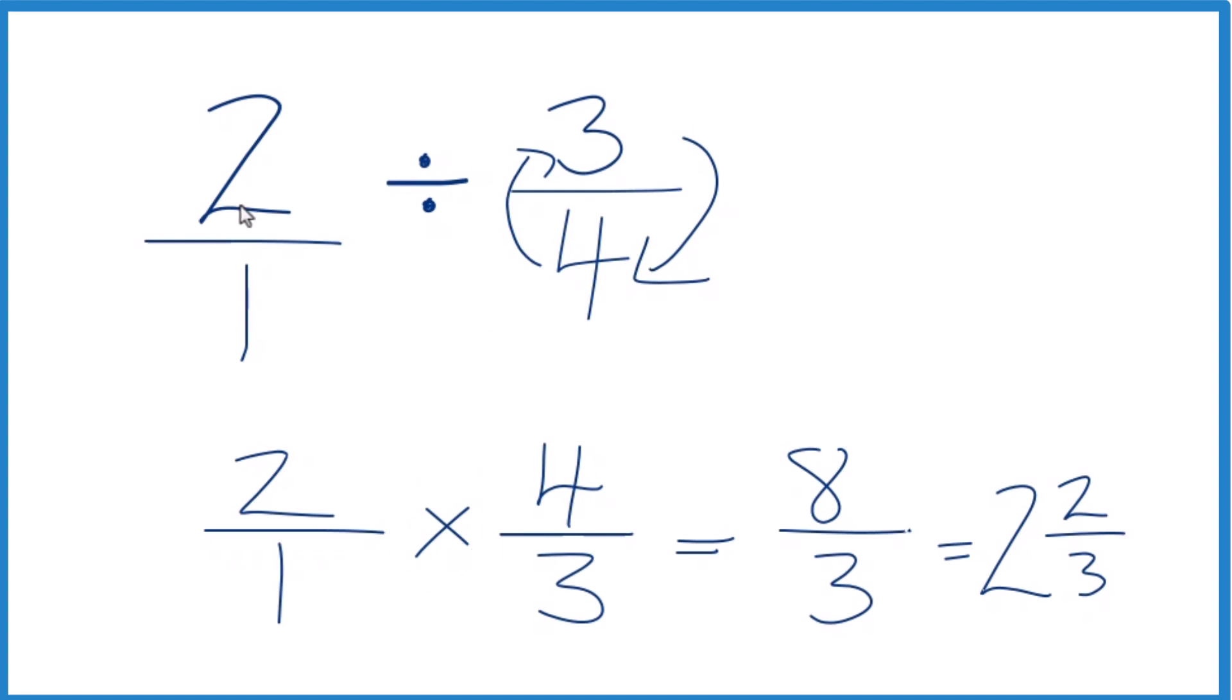That's it. That's how you divide 2 by 3 fourths. The answer is 8 thirds. Or as a mixed number, 2 and 2 thirds.